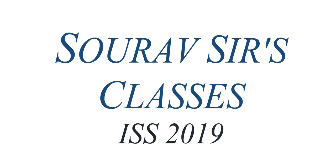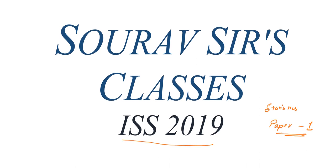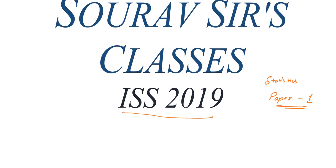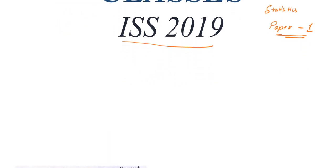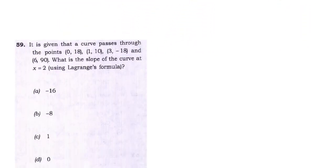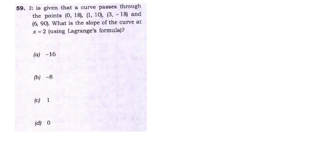Hello students, welcome to Sorosers Classes. In this video we are going to solve the ISS 2019 question paper — specifically Statistics Paper 1. We are going to solve selective questions from Paper 1, since we have been solving these questions across numerous videos. In this video we are going to start with question number 59.